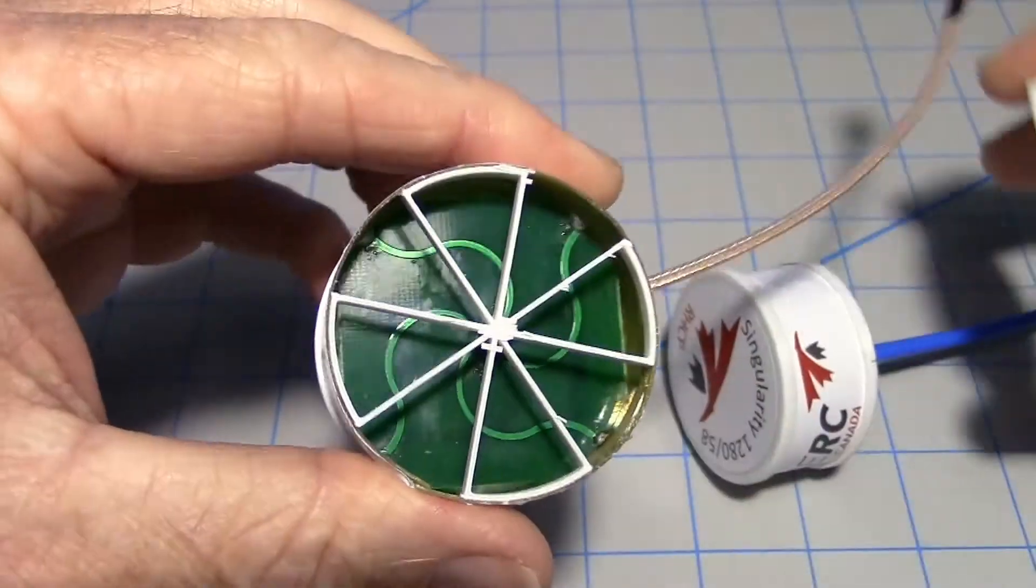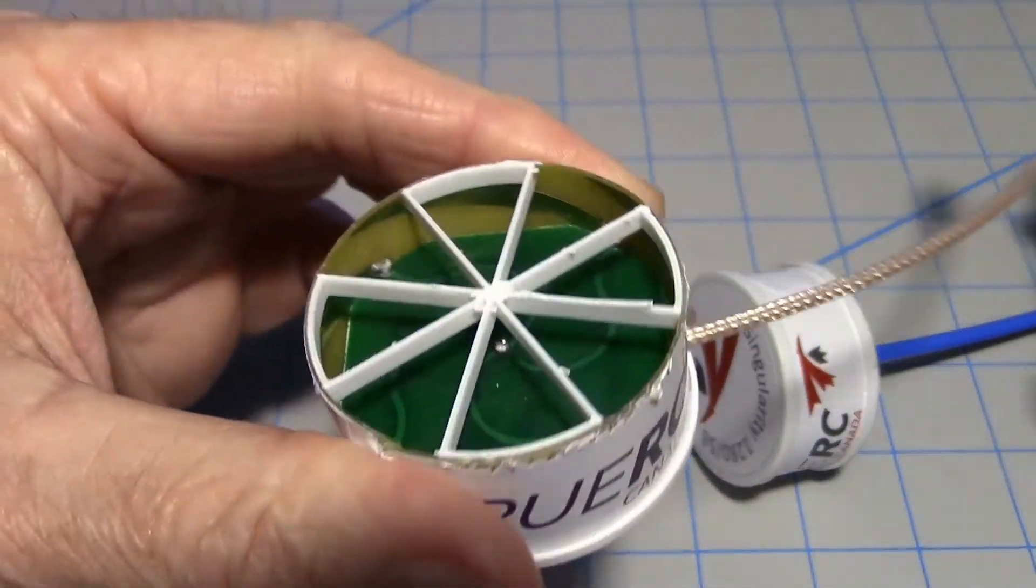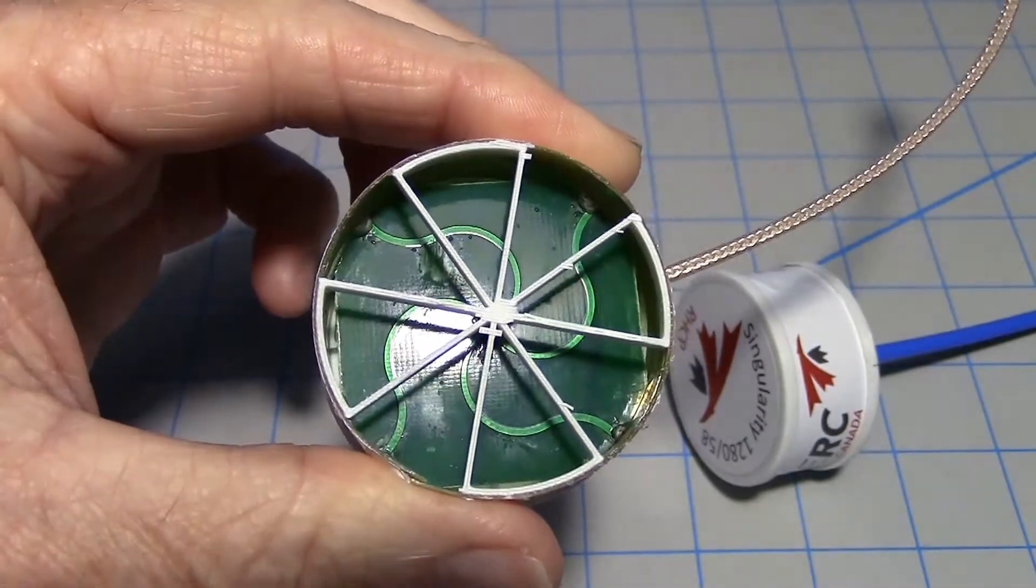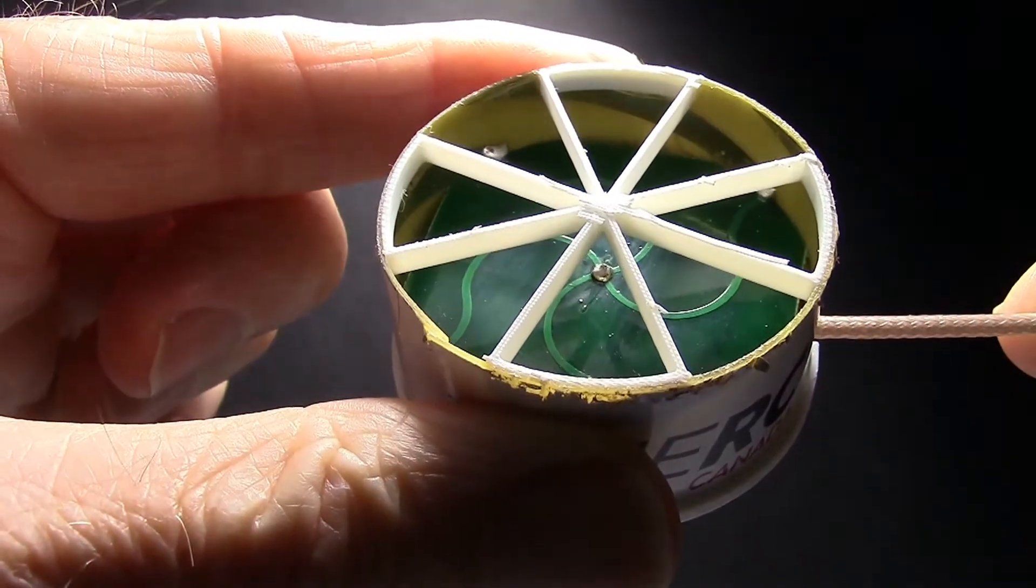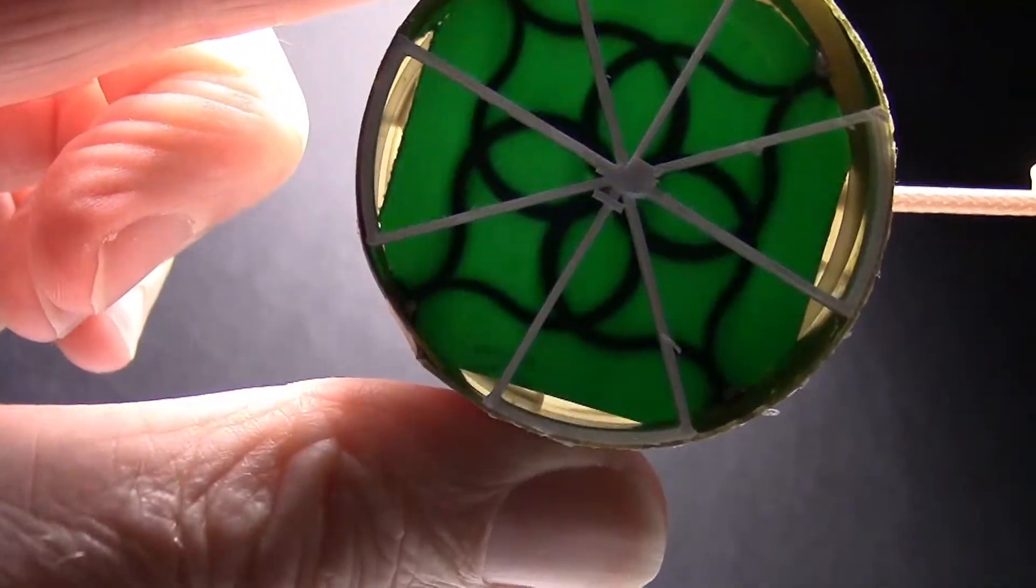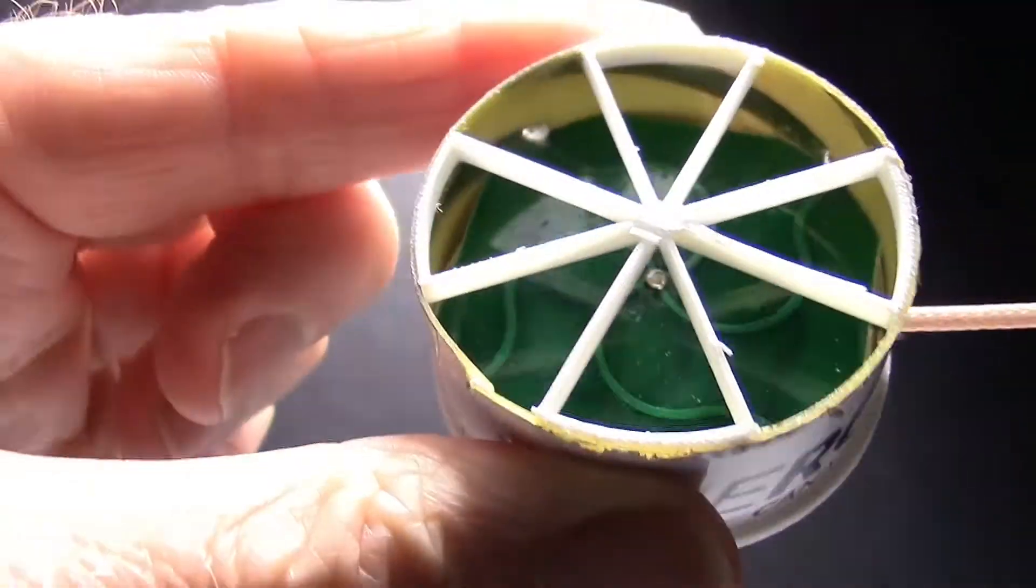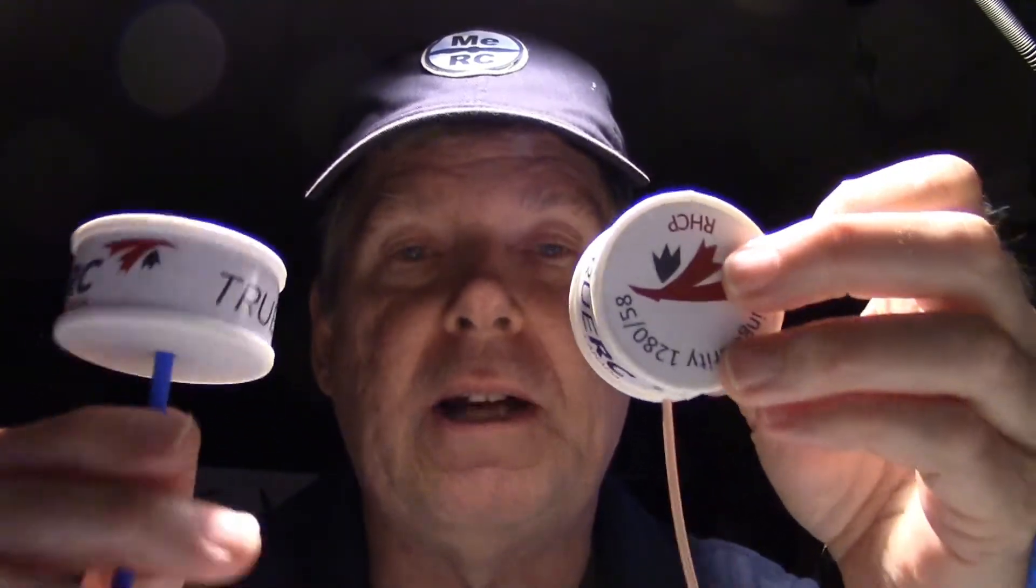I just got some new antennas in and I couldn't resist taking them apart because they're quite unique. These are TrueRC 1.2 gigahertz receiver transmitter antennas. So let's go ahead on the bench and take a look at these and I want to talk about the five or six things that I really like about these antennas.